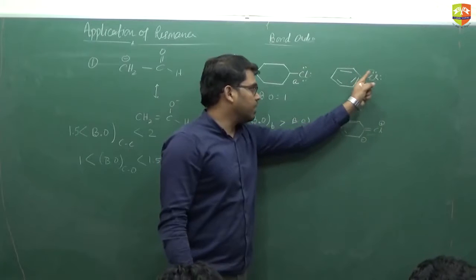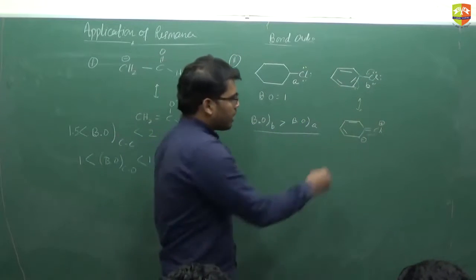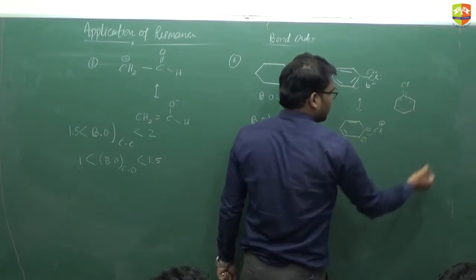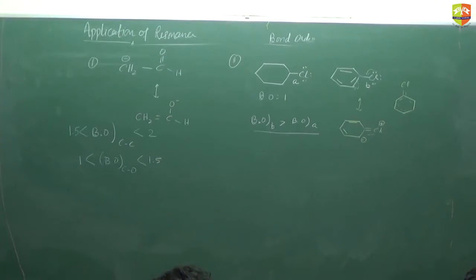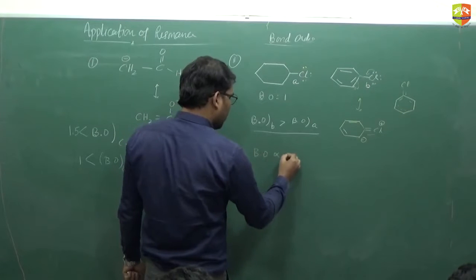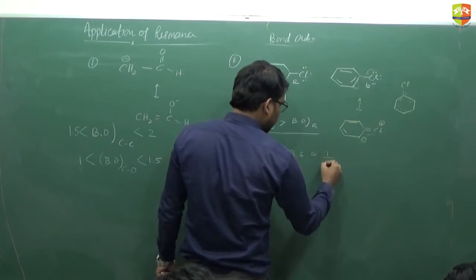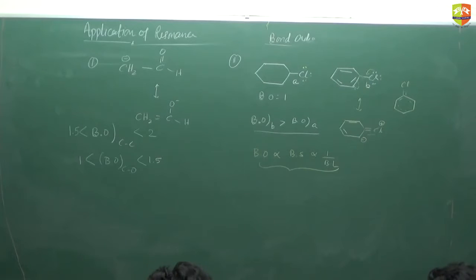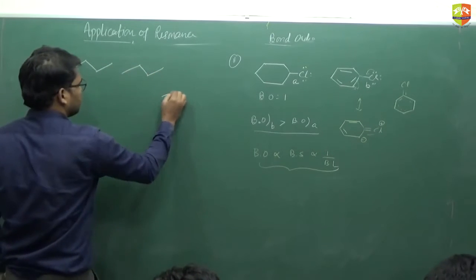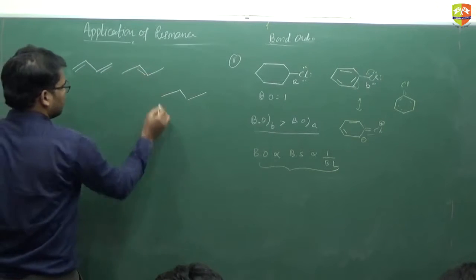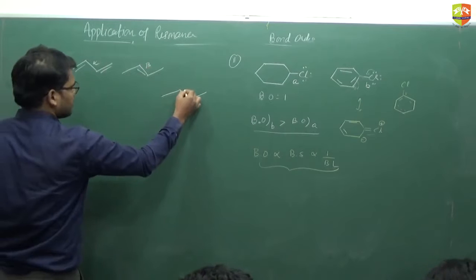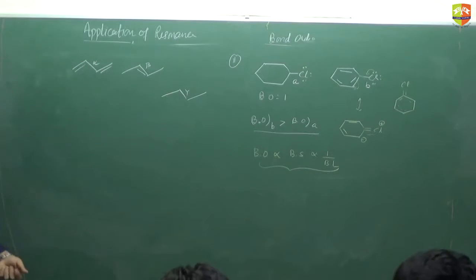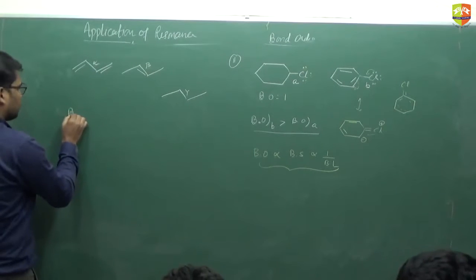Because of resonance, partial double bond character is present continuously if you draw the actual structure. Bond order and bond strength are directly proportional and bond length is inversely proportional to bond order. The next question asks for the bond order of the alpha, beta, and gamma bonds. Alpha means this carbon-carbon bond, beta is the next, gamma is after that. Beta is the highest bond order, then alpha, then gamma.